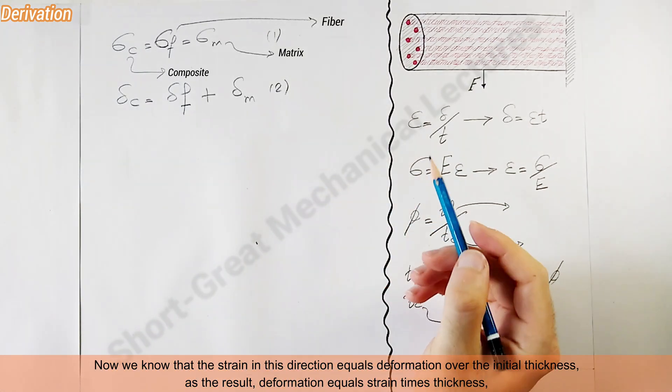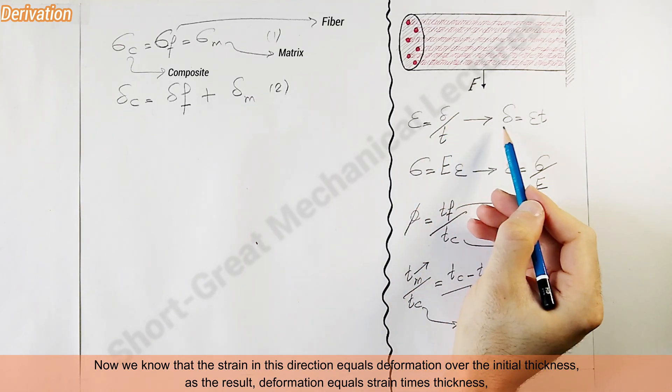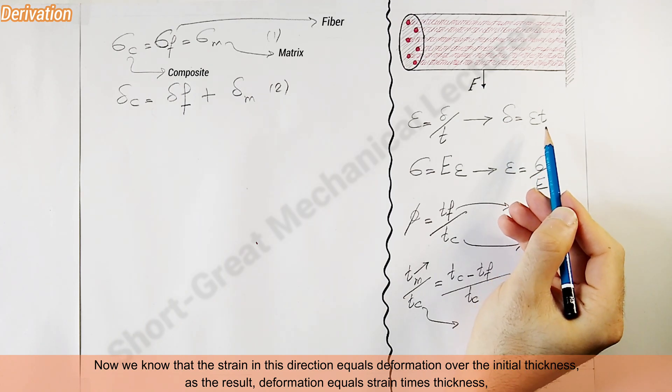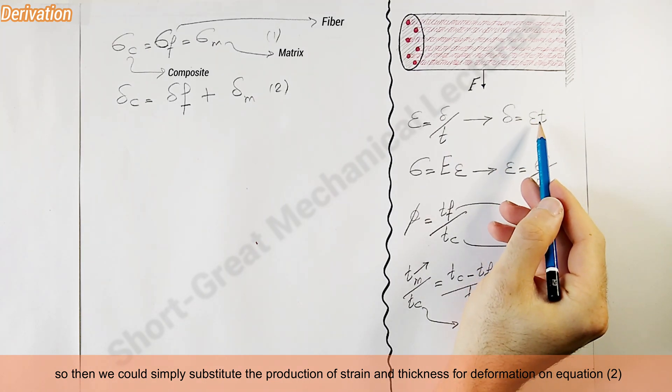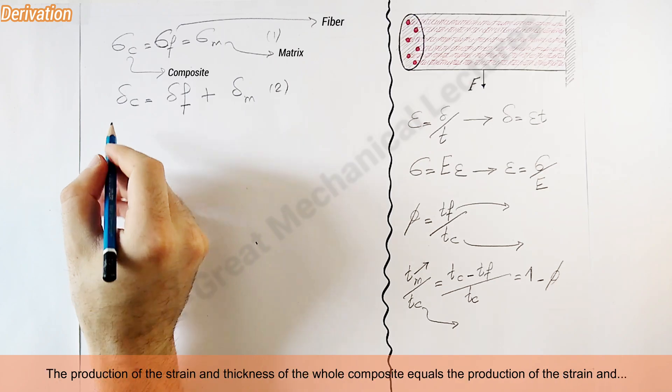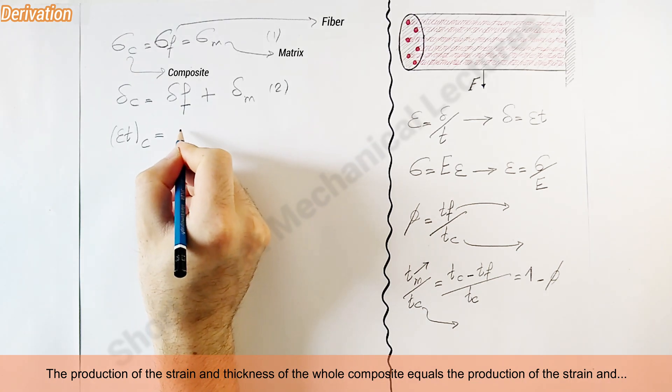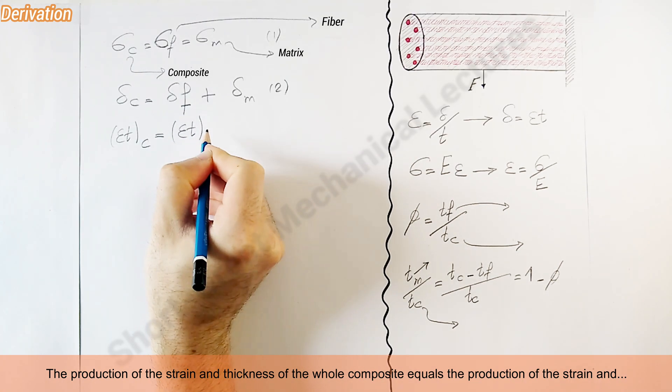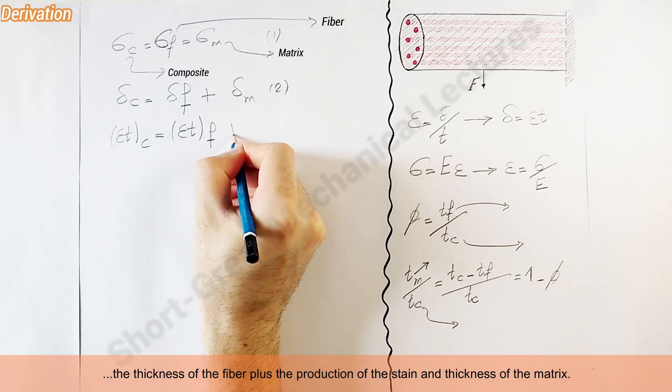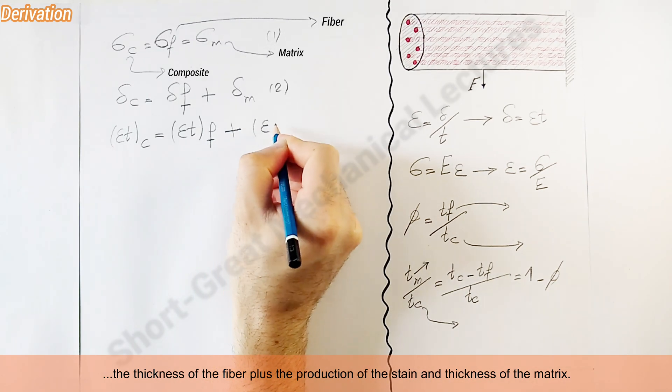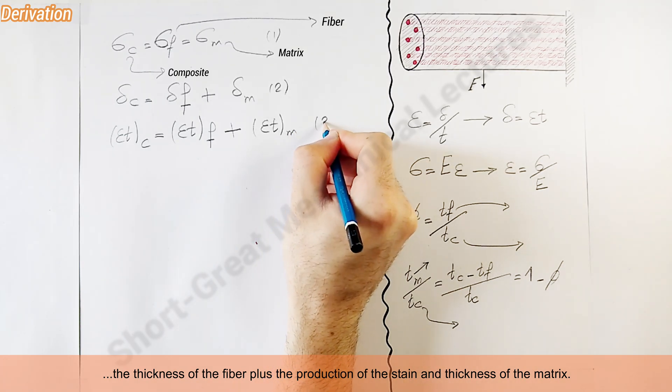Now we know that the strain in this direction equals deformation over the initial thickness. As a result, deformation equals the strain times thickness. So then we could simply substitute the product of strain and thickness for deformation in equation two. The product of strain and thickness of the whole composite equals the product of the strain and the thickness of the fiber plus the product of the strain and thickness of the matrix.